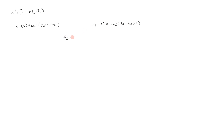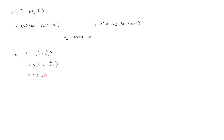To obtain our sampled signals, x1[n] is just x1 evaluated at n · Ts, or n times 1/Fs since those two are equivalent. That gives us x1(n/1000), and that equals cosine of 2π · 400 · (1/1000) · n, which in simplified form is cosine of 0.8π·n.